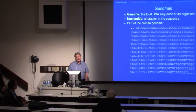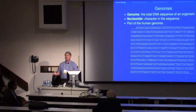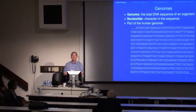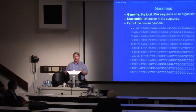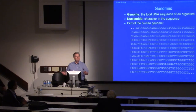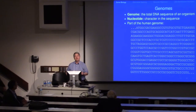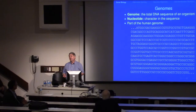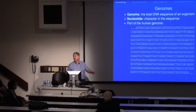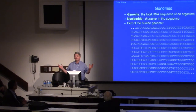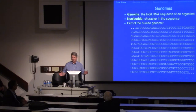The biology starts with genomes. Organisms have genomes — the DNA that makes up their genomes — and each letter in a genome is called a nucleotide. This is part of the human genome; it just looks like a string of A's, C's, G's and T's, so it's great for computer scientists.